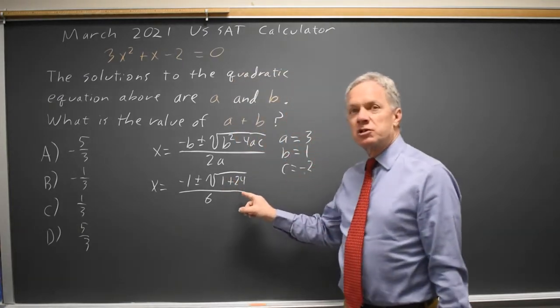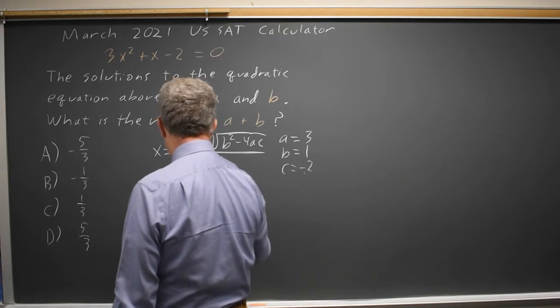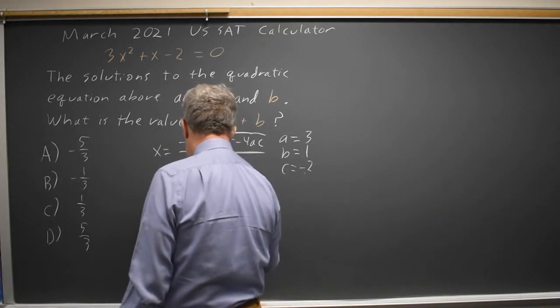1 plus 24 is 25, square root is 5, so X equals negative 1 plus or minus 5 over 6.